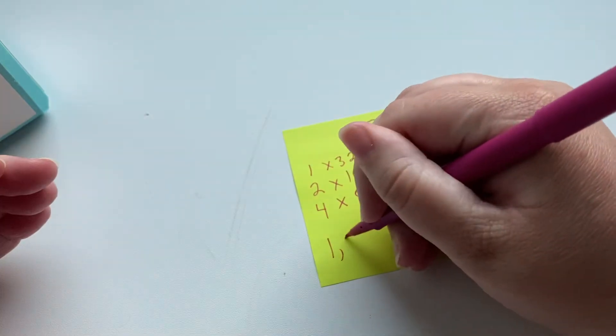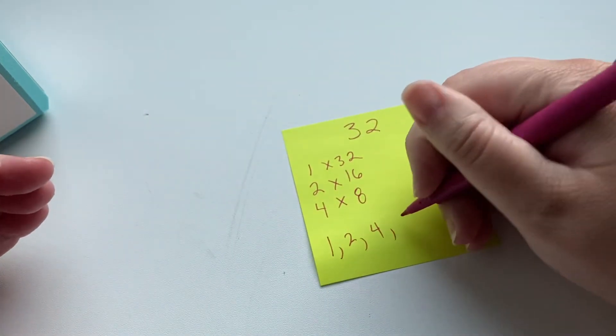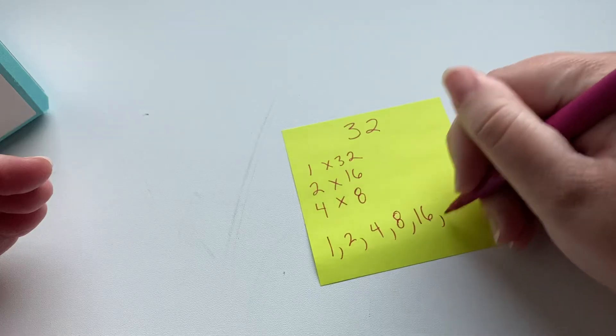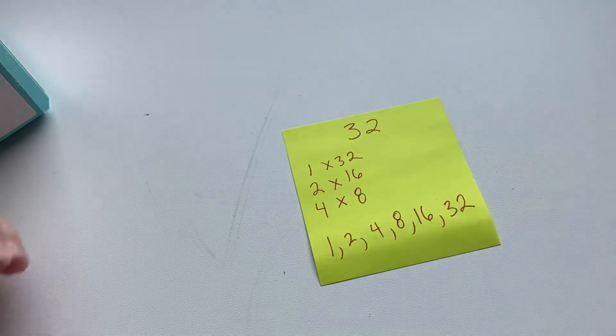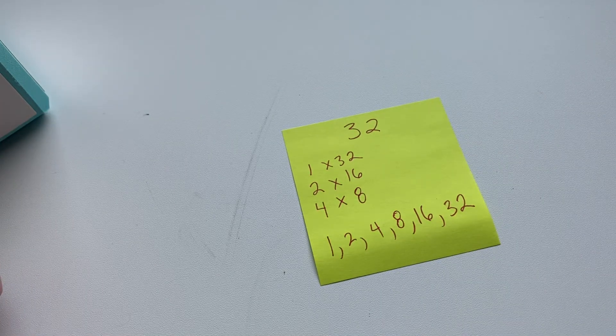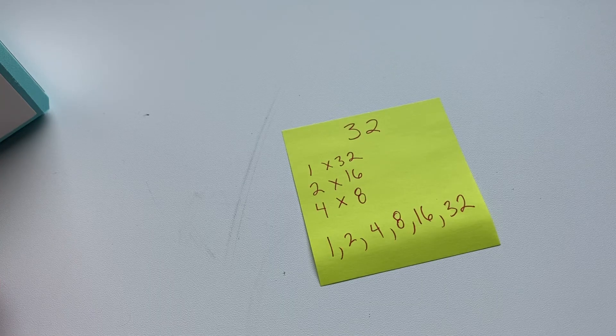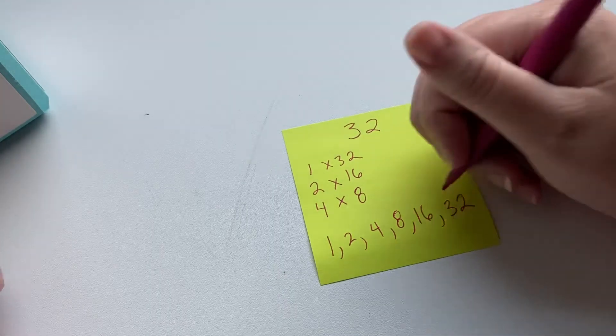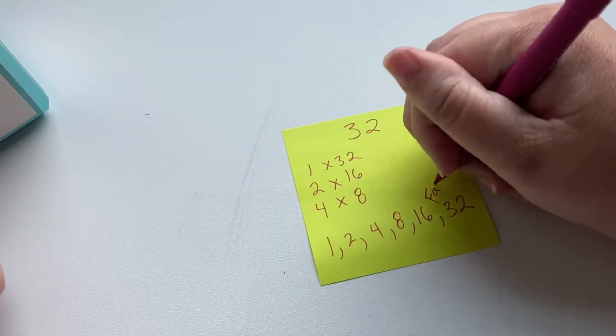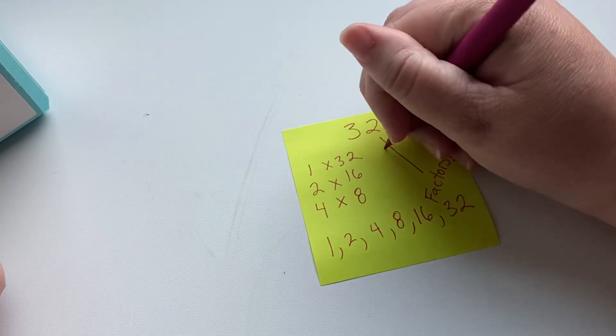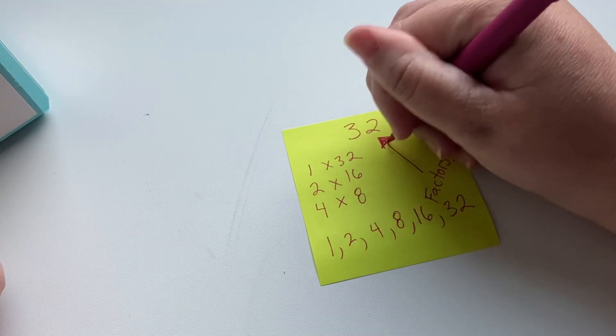So we have 1, 2, 4, 8, 16, and 32. So those are just some strategies of how you find a factor. These, again, are the factors of 32.